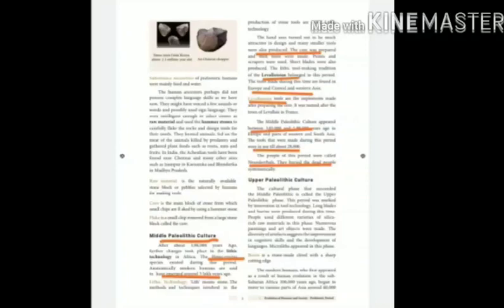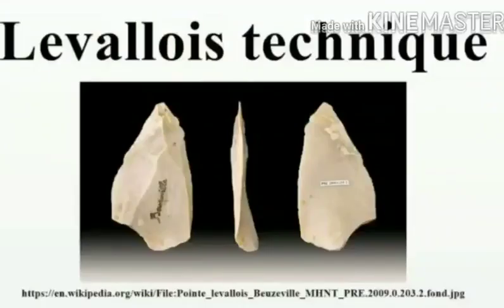Lith means stone. The methods and techniques involved in the production of stone tools are called lithic technology. The hand axes became much more attractive in design and many smaller tools were also produced. The core was prepared and then tools were made. Points and scrapers were used. Short flakes were also produced. The lithic tool-making tradition of the Levallisian belongs to this period. The tools made during this time are found in Europe and Central and Western Asia.